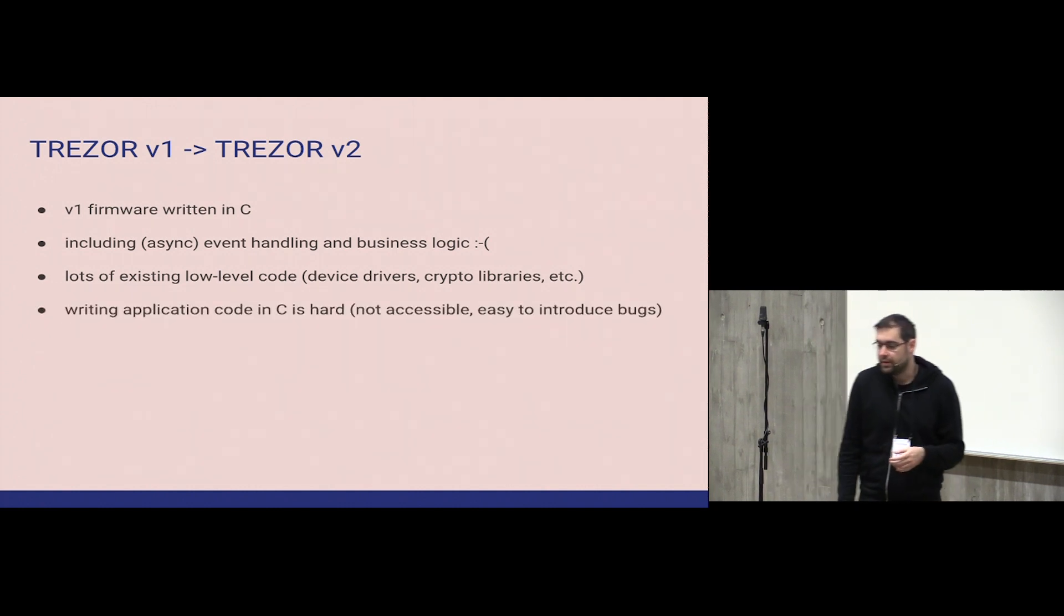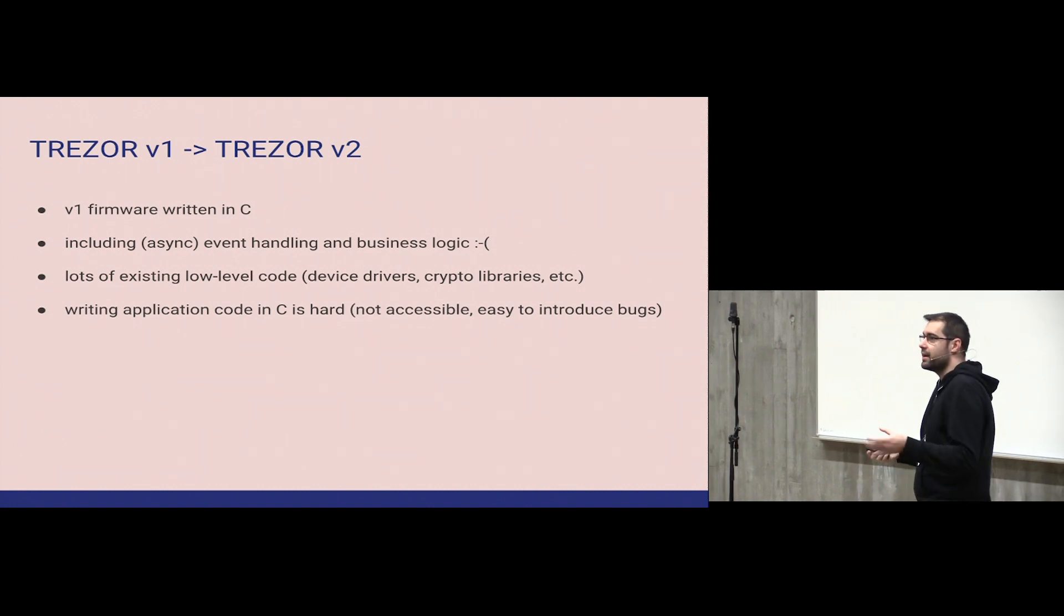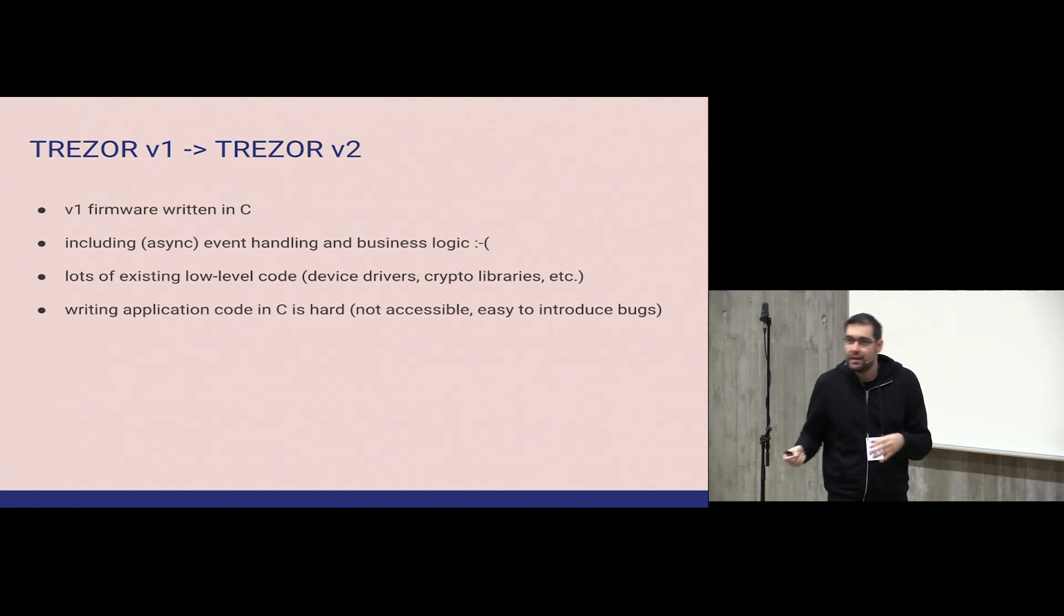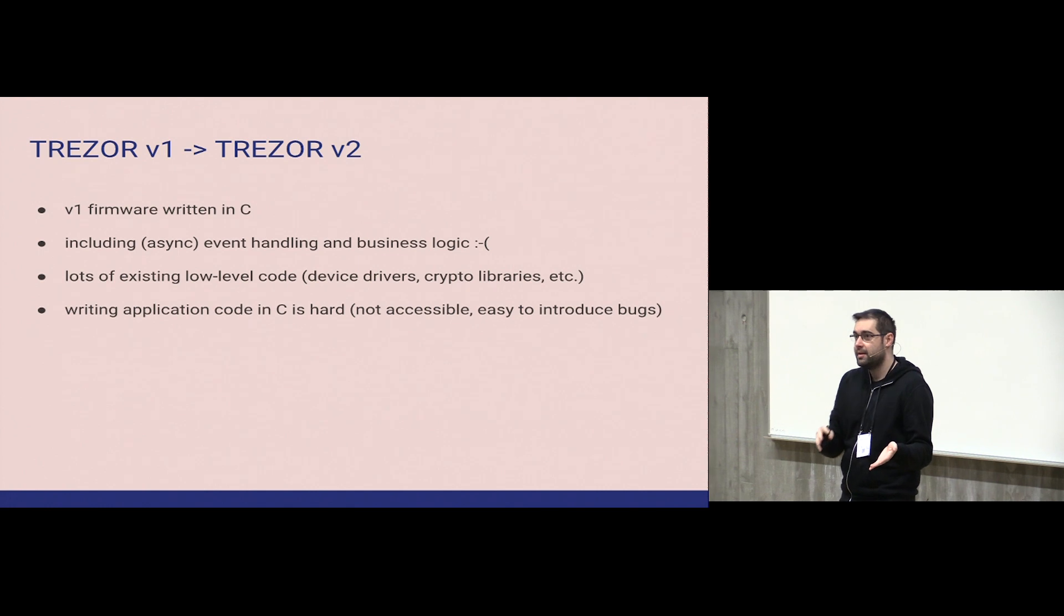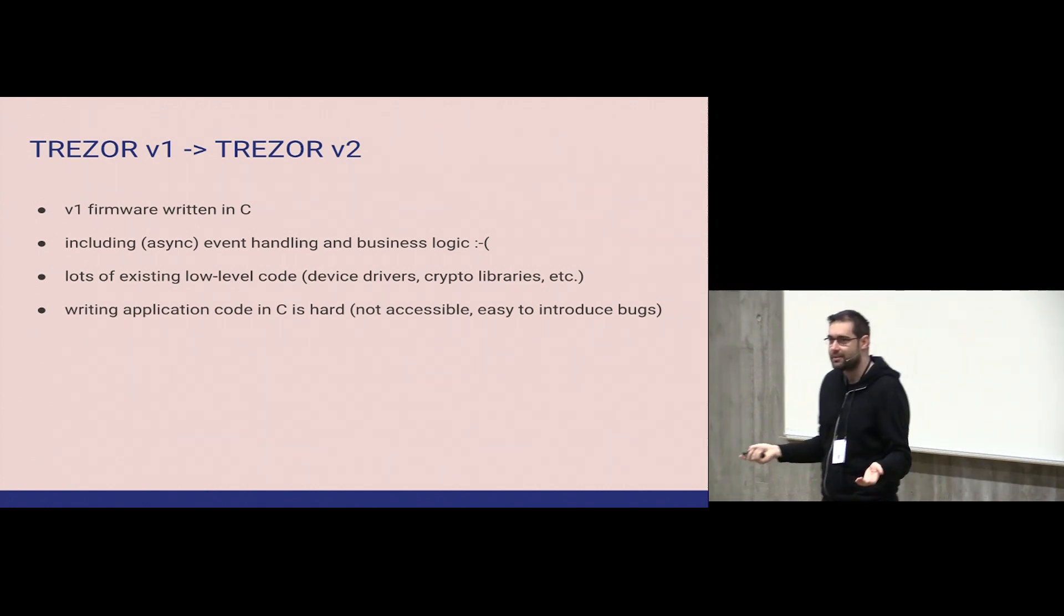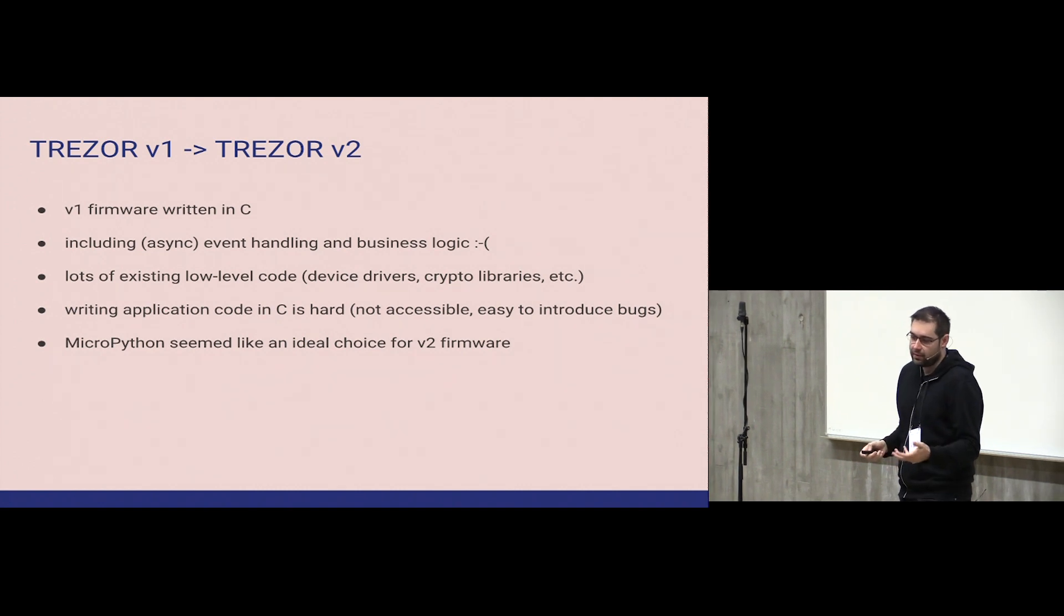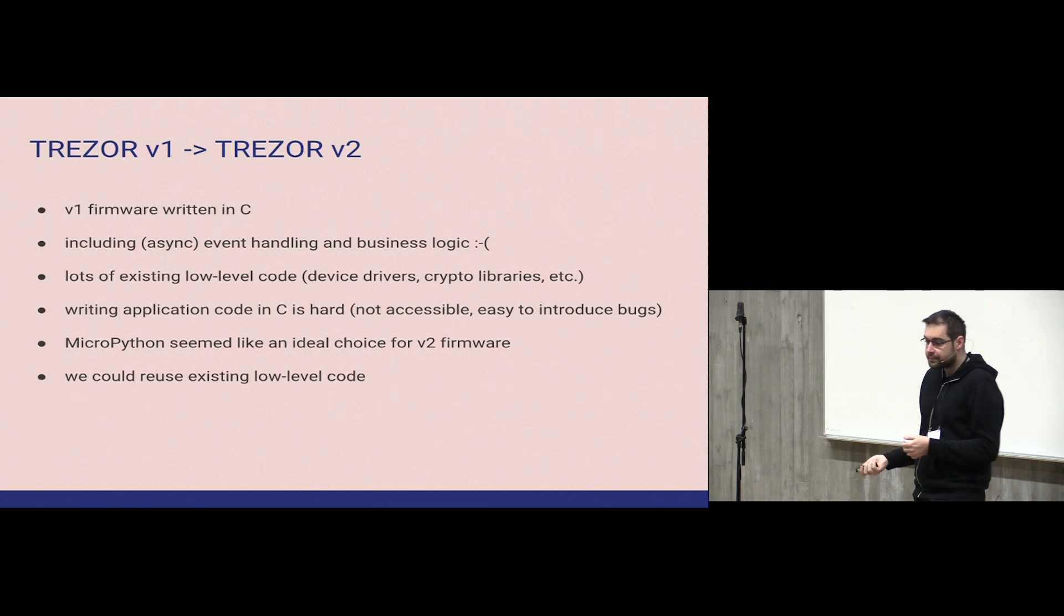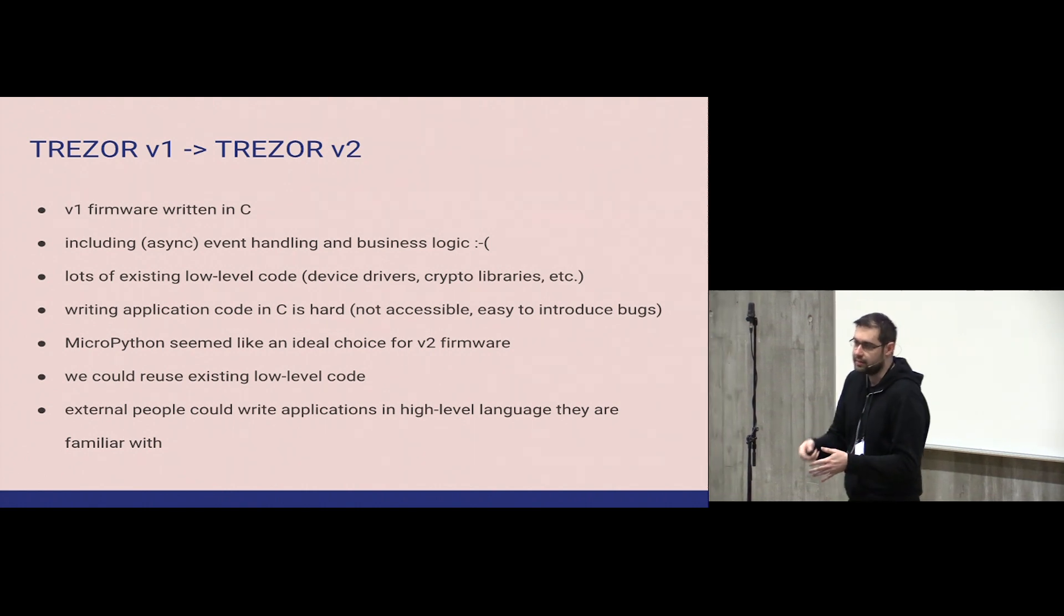Also it was a problem that all this business logic, which is usually high level, like take this message, concatenate it with this message, and sign them together, and return the signature to computer. It was also written in C, and even the most easy tasks started to get a lot of lines of code, and it was very easy to make mistakes. So we had a lot of existing low level code in C, like device drivers and crypto libraries. It was very easy to introduce bugs in this business application code, and it was not very accessible. We tried to focus on Bitcoin, but from time to time there were people like, I'm developing this alternative coin, please add support to Trezor. But it was very hard for normal folks to understand the embedded C code.